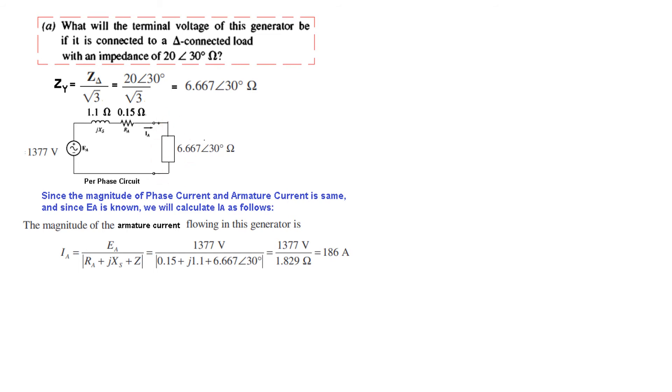Now we calculate the phase voltage. The phase voltage with load is I into Z, 186 into Z. The phase voltage is 1240 volts. To calculate the terminal voltage, we have to multiply the phase voltage by under root 3. So the terminal voltage with load is 2148V. This is the answer of the first part.